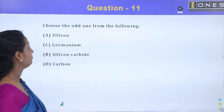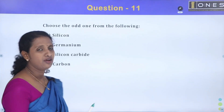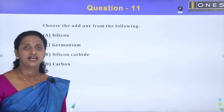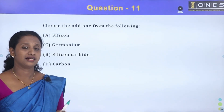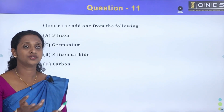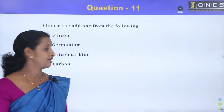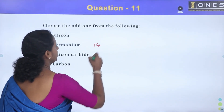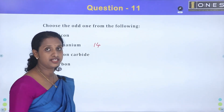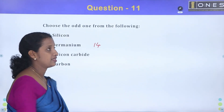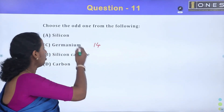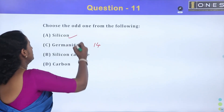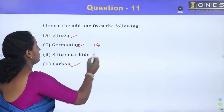Choose the odd one from the following. This is a very easy question. We have a table in group 14. We have a periodic table in the 14th group. What elements are there? What is the odd one? Silicon, Germanium, Carbon.